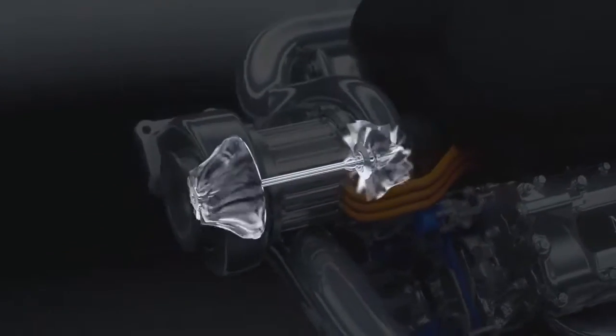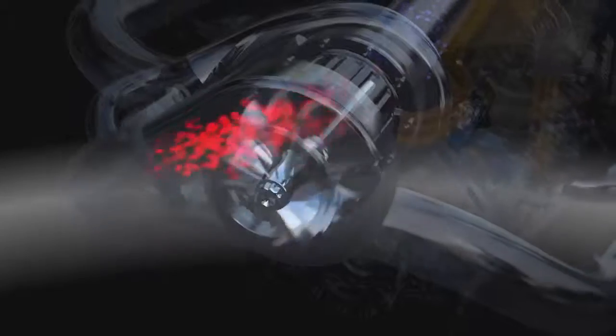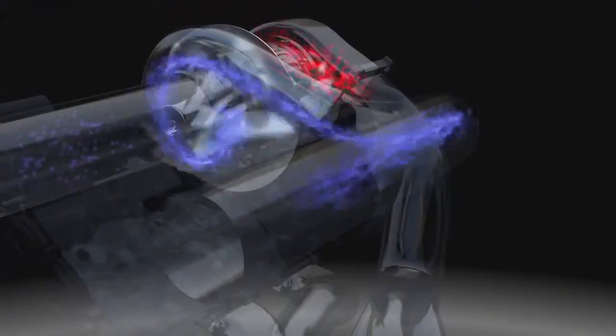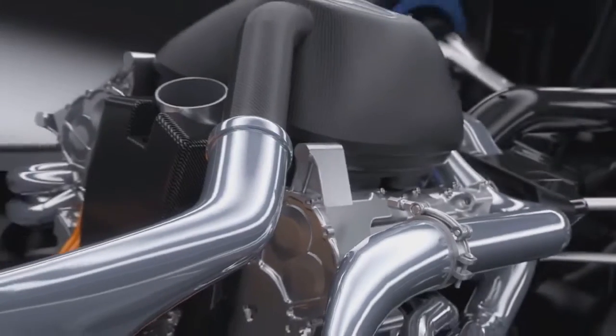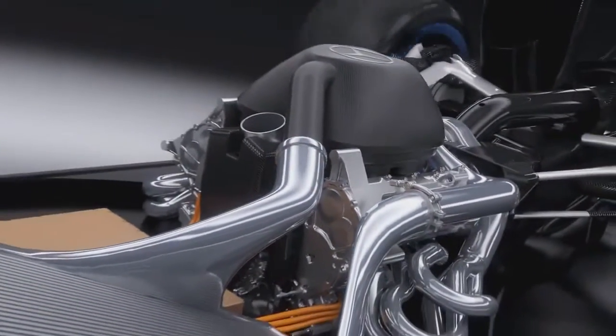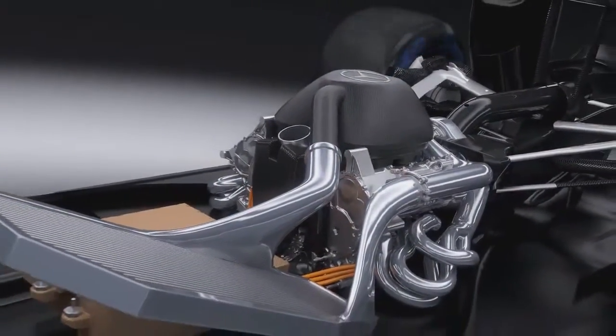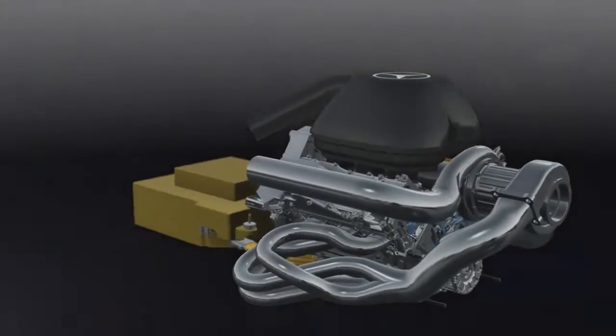It is achieved with a downsized 1.6-liter turbo hybrid engine. The turbo uses exhaust gases to drive a compressor to push more air and therefore more oxygen into the engine. Together with high-pressure direct fuel injection, this makes combustion more efficient, more power using less fuel.